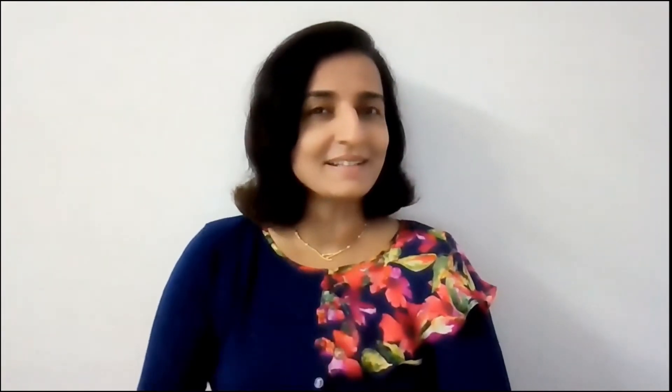Now, in direct material yield variance, we are trying to find out whether the total quantity of raw materials is more or less than the standard. So let's take a look.